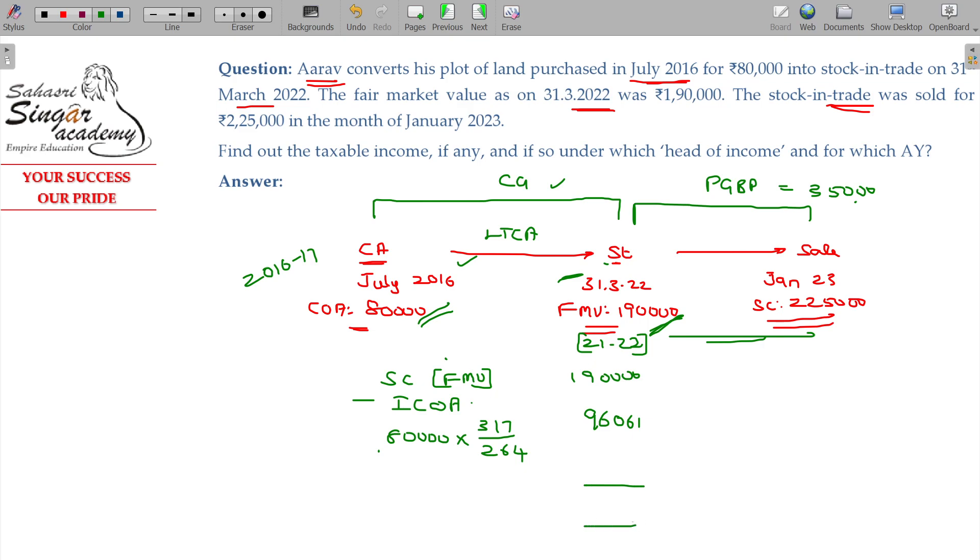Subtracting this gives a long-term capital gain of Rs. 93,939 under Section 45(2), while the Rs. 35,000 difference is PGBP under Section 28.